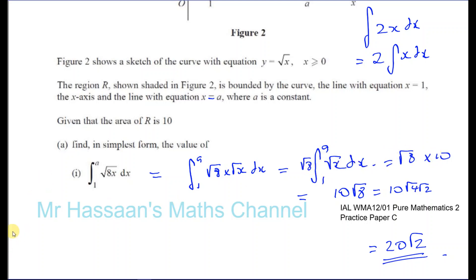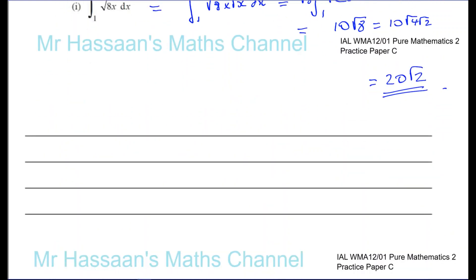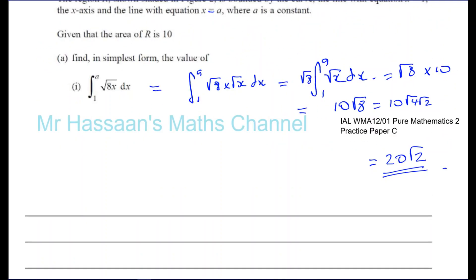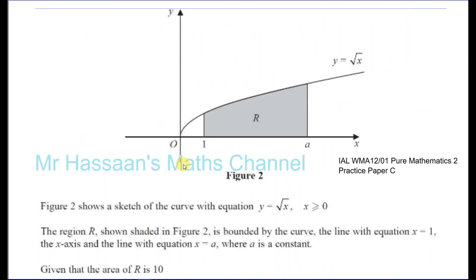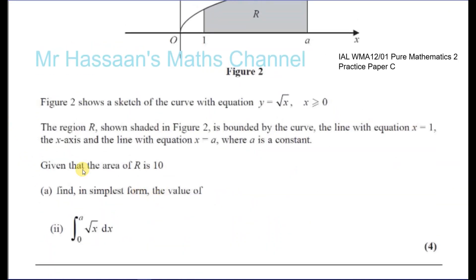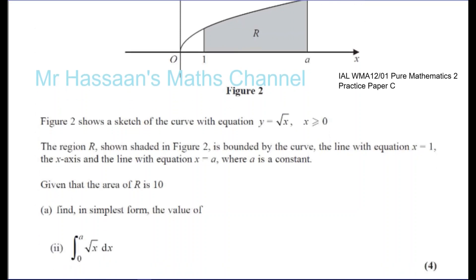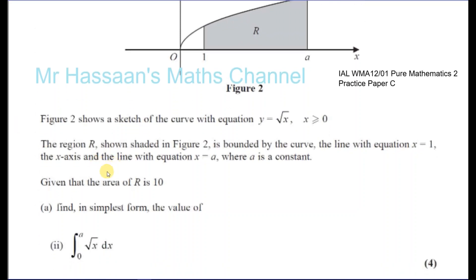That's part 1. Part 2 is on the next page. So for part 2, finding in its simplest form the value of the integral between A and 0 of root x. I've redrawn the diagram here so we can see what's going on.